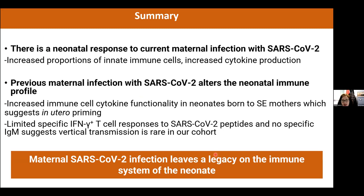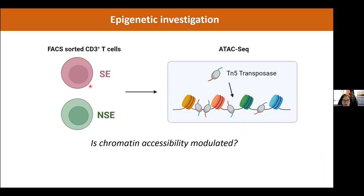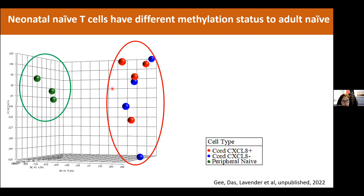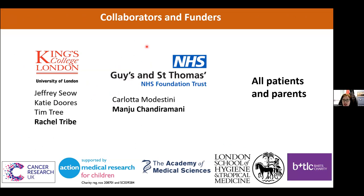Maternal SARS-CoV-2 infection does leave a legacy on the neonatal immune system. Going forward, we are assessing by epigenetics whether this is a long-term effect — comparing babies born to unexposed mothers versus exposed mothers to determine if they are epigenetically different and whether maternal infection caused a permanent change making neonatal immune cells more capable of cytokine production. Our methylation array data shows that adult naive T cells and cord blood naive T cells already segregate very differently in their epigenetics, and SARS-CoV-2-exposed infant T cells may shift toward a more adult-like epigenetic profile.